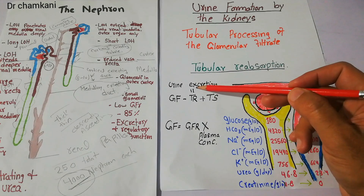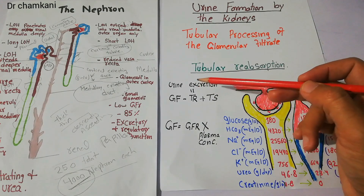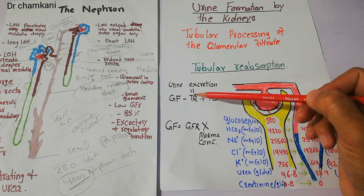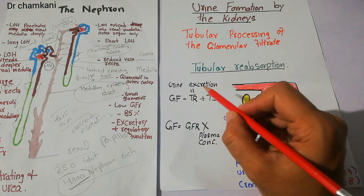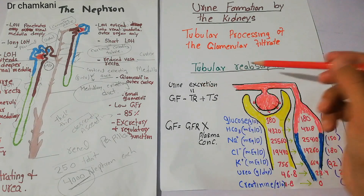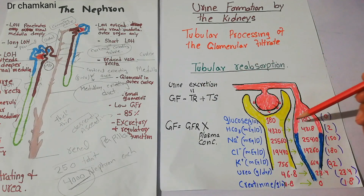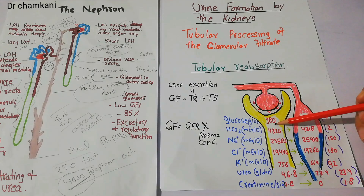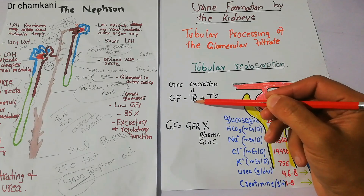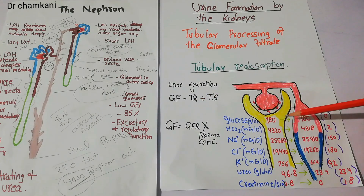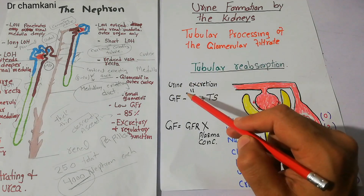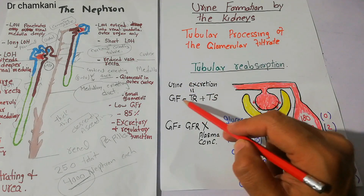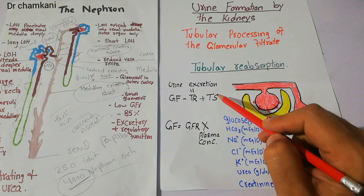Overall, urine excretion is basically: glomerular filtration minus tubular reabsorption plus tubular secretion. First, filtration occurs; then the filtrate enters the tubule, and reabsorption occurs — a lot of substances from the filtrate are reabsorbed. Finally, some substances are secreted from the peritubular capillaries into the tubule. So overall, urine excretion equals filtration minus reabsorption plus tubular secretion.